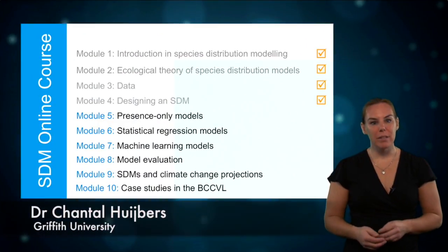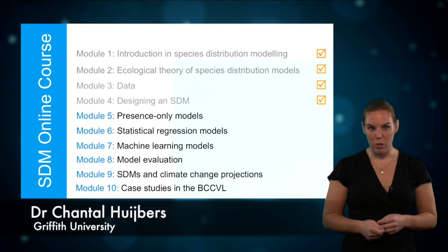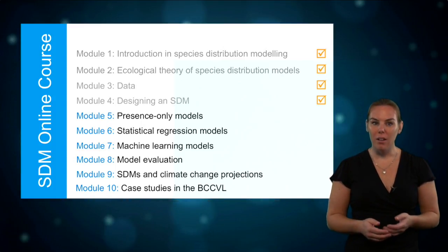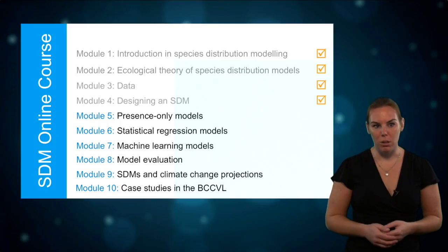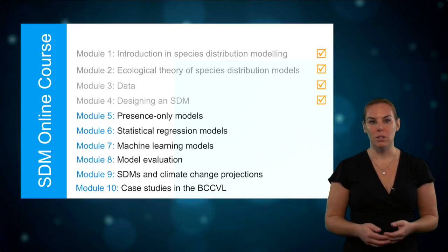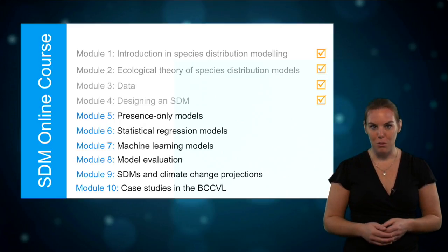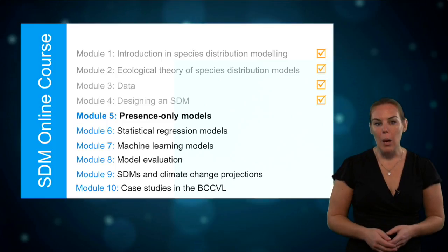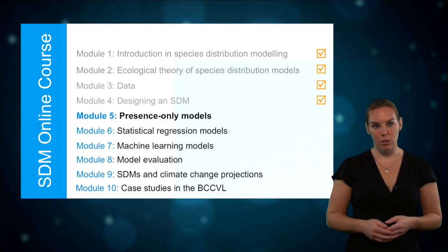Welcome back. In the previous modules of this online open course in species distribution modeling, we've learned a great deal about the kind of data that you need to build a model and we had a quick look at the different kinds of algorithms that you can use. So now it's time to explain these algorithms in more detail. In this module we will look at models that only use presence data.